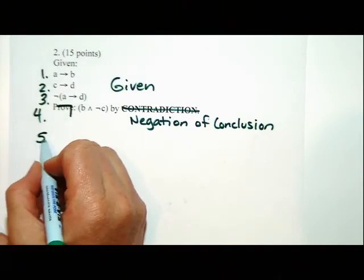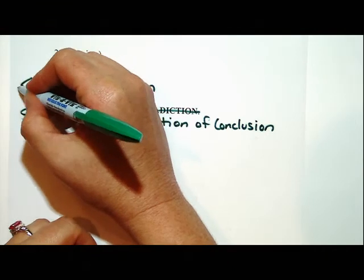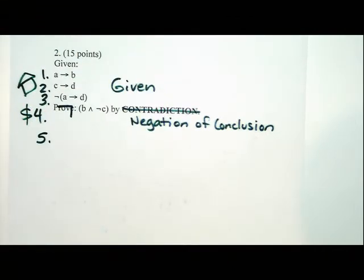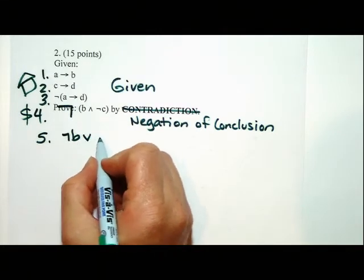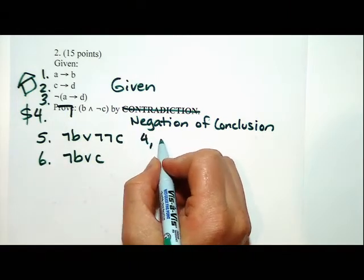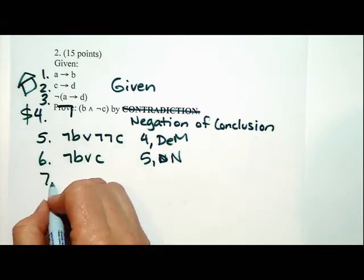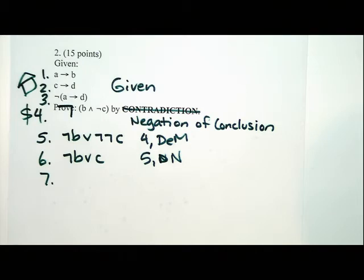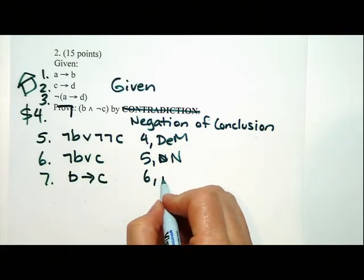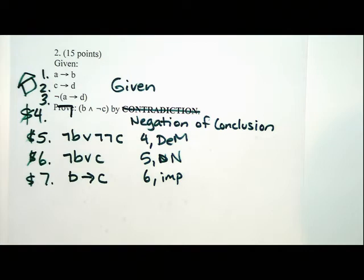To do proof by contradiction, first we negate the conclusion — I call that the money, and we're going to spend it at the store. What we need to do in order to use it is to do DeMorgan's on it, so we're going to get not B or not not C. That was line four and DeMorgan's. You can also abbreviate your rules. This is double negation. I like to go ahead and do the implication rule if I have an or, and simplification if I have an and. So this is an or, so we can turn that into an implication. These things all came from the negation of the conclusion — I've used four, five, and six.